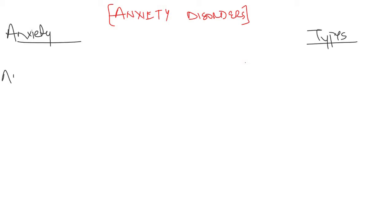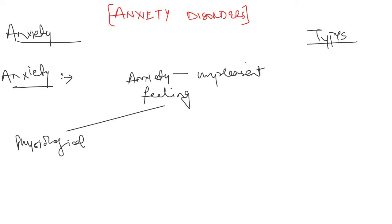First of all, let's talk about anxiety in medical terms. Anxiety is nothing but an unpleasant feeling which is characterized by both physiological component and psychological component. The physiological components are increased heart rate and increased BP. If someone has anxiety, the BP will be increased and the heart rate will also be increased. Respiratory rate may or may not be increased.